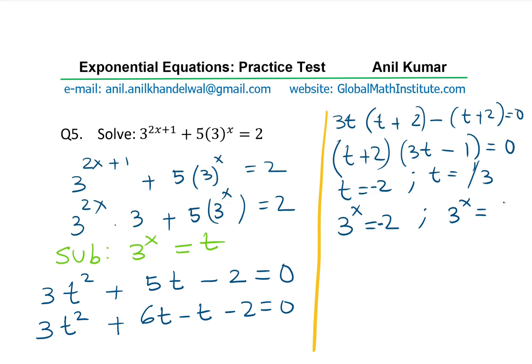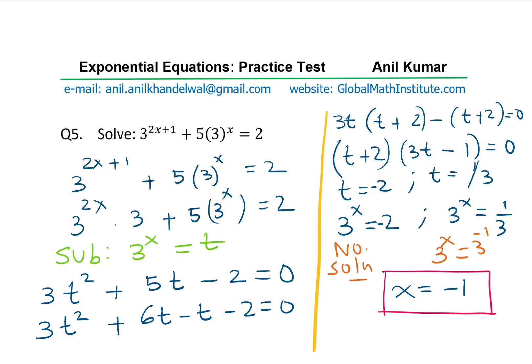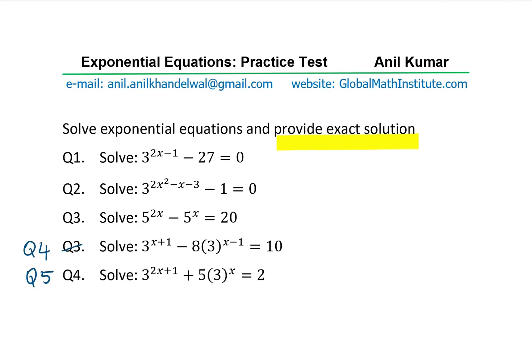This gives t equals minus 2 or t equals 1 over 3. Since 3 to the power of x cannot be negative, t equals minus 2 gives no solution. However, 3^x equals 1 over 3 means 3^x equals 3 to the power of minus 1, so x equals minus 1. Since the domain of exponential functions is all real numbers, x equals minus 1 is valid. I hope this helps you understand solving exponential equations.